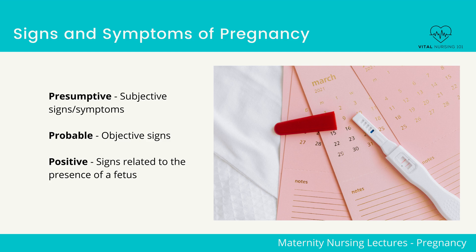Ballottement — rebound of the unengaged fetus. Braxton-Hicks contractions, which are false contractions that are painless, irregular, and usually relieved by walking. Also included is a positive pregnancy test.